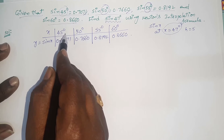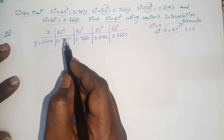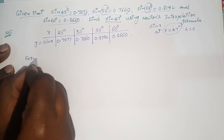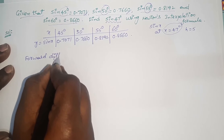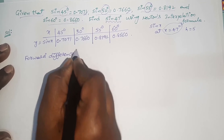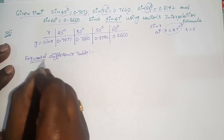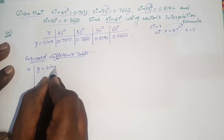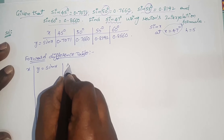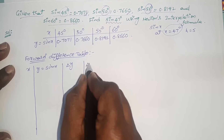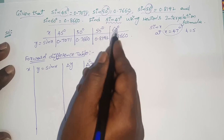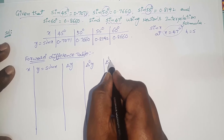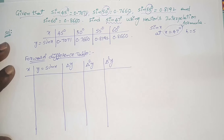Since x = 47° lies at the first interval, I am going to apply Newton's forward interpolation formula. First of all, we should construct the forward difference table. We write x values, y = sin x values, then first-order differences Δy, second-order Δ²y, and since four values are given, up to third-order forward differences exist in the table.